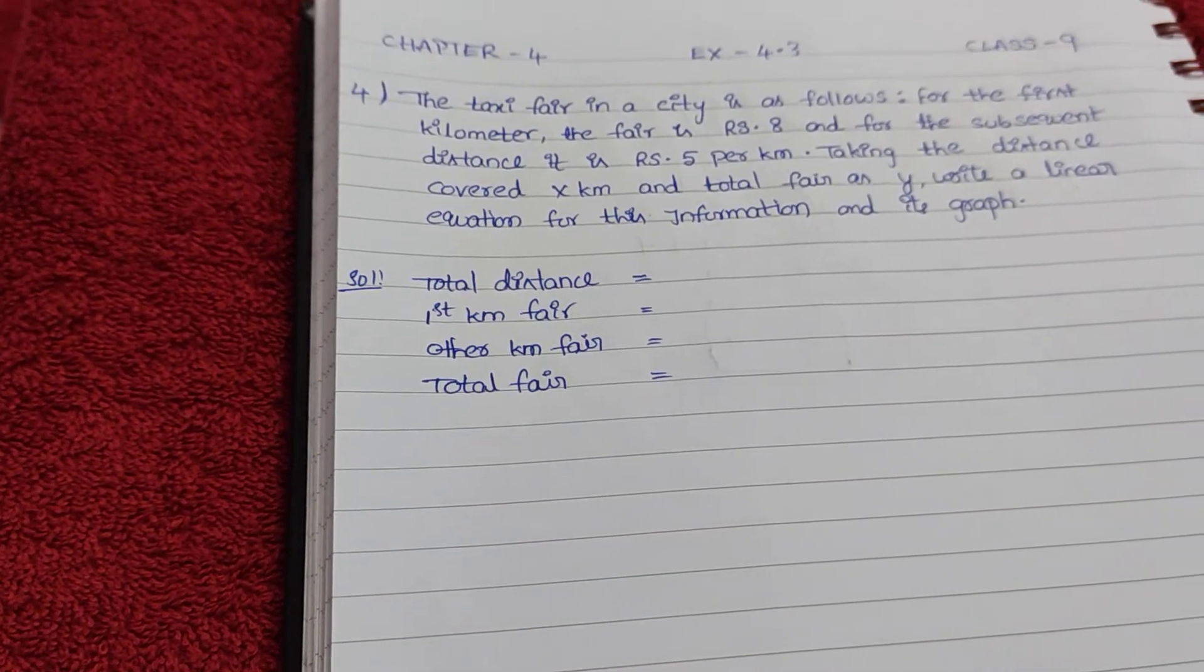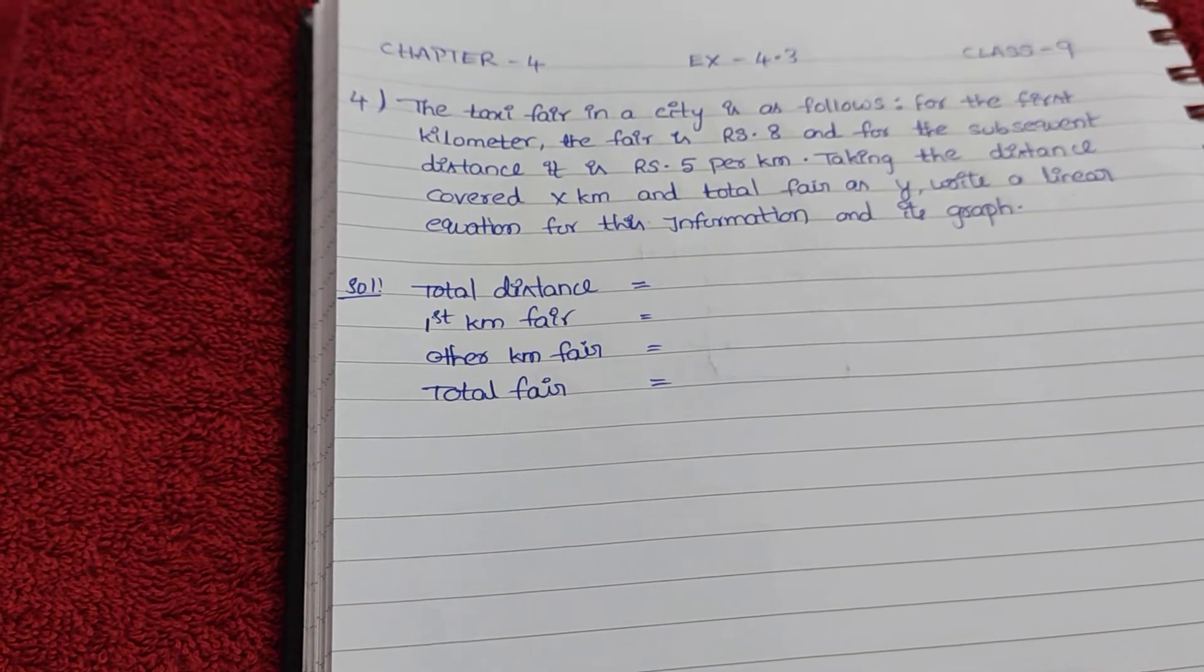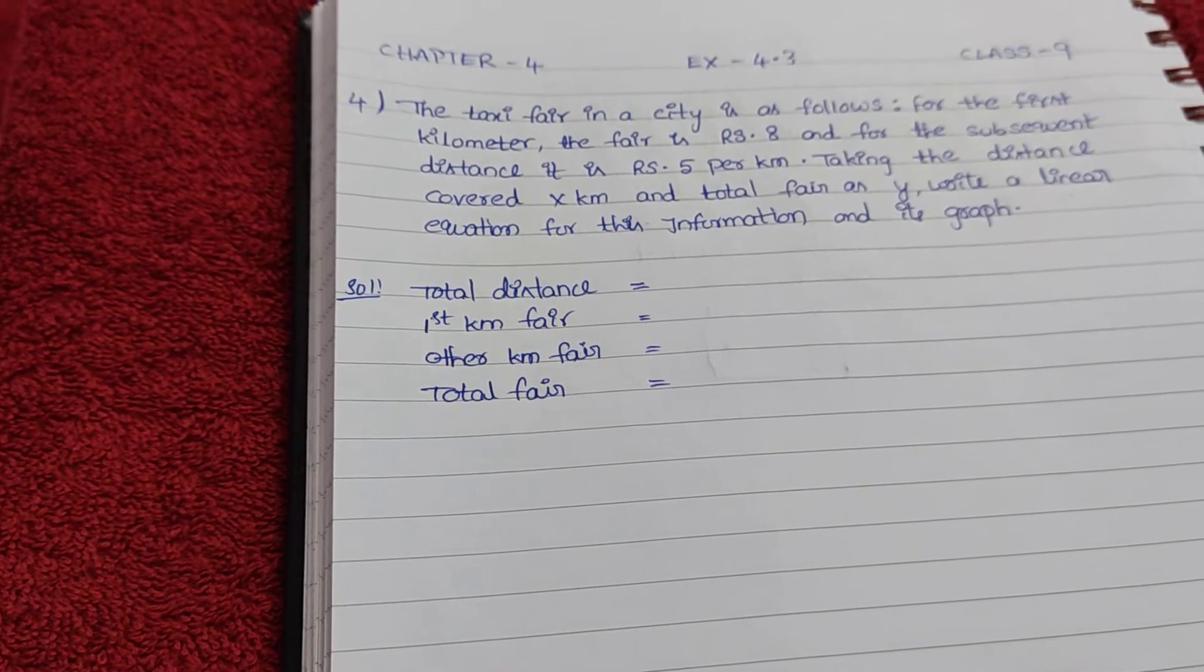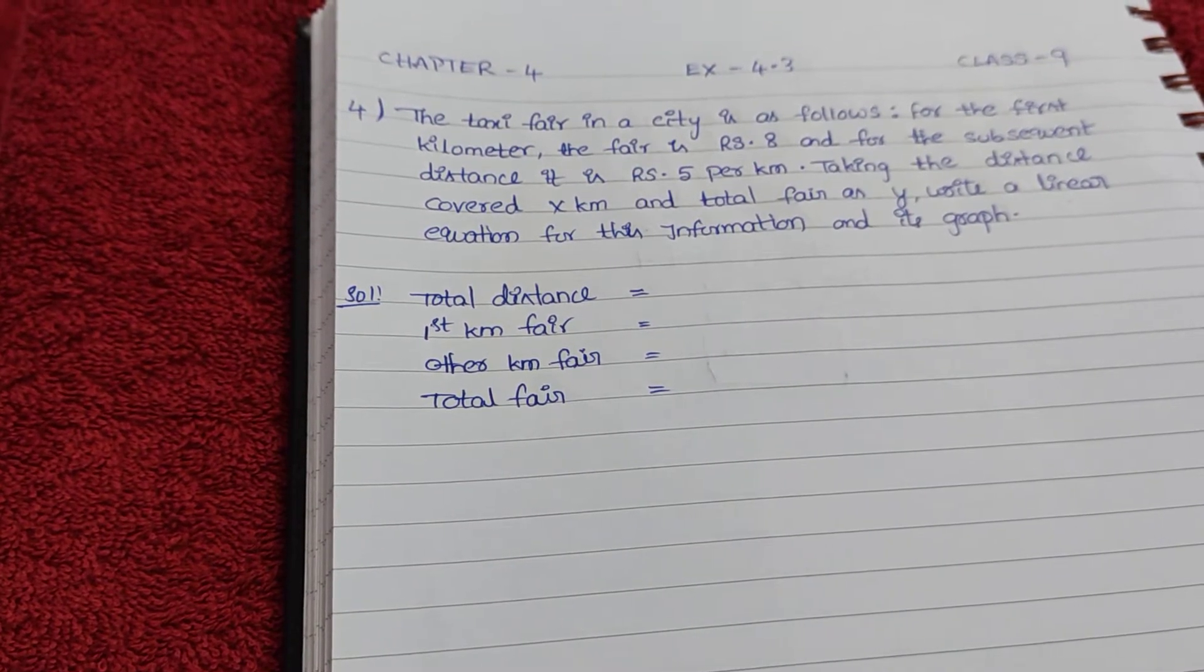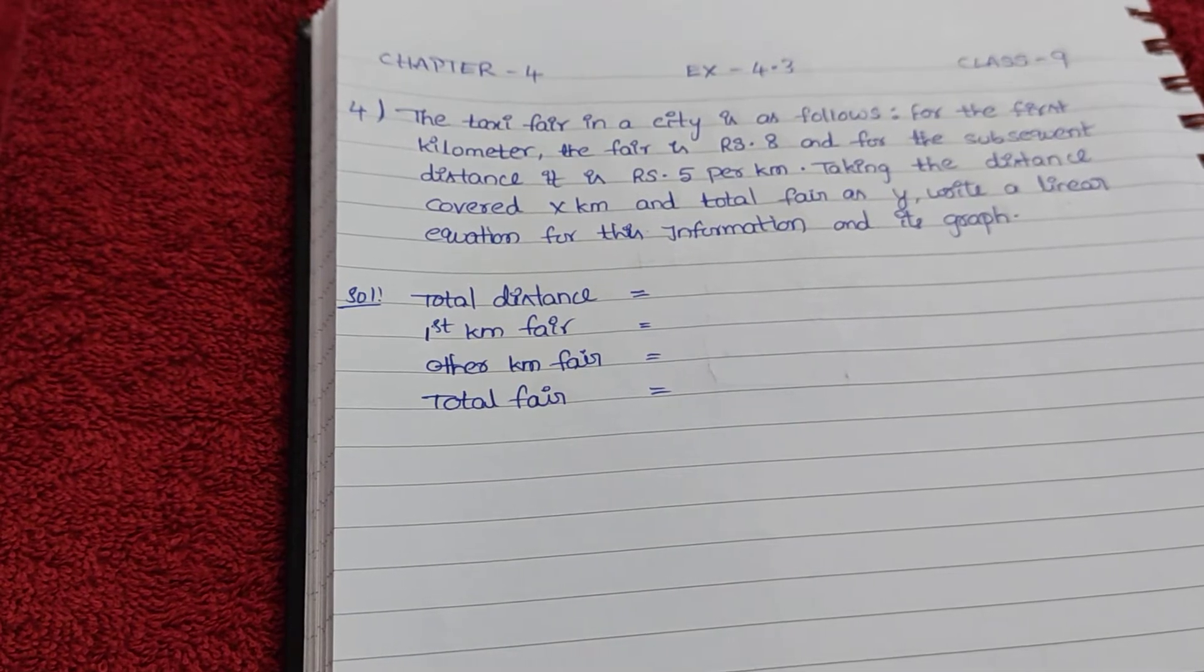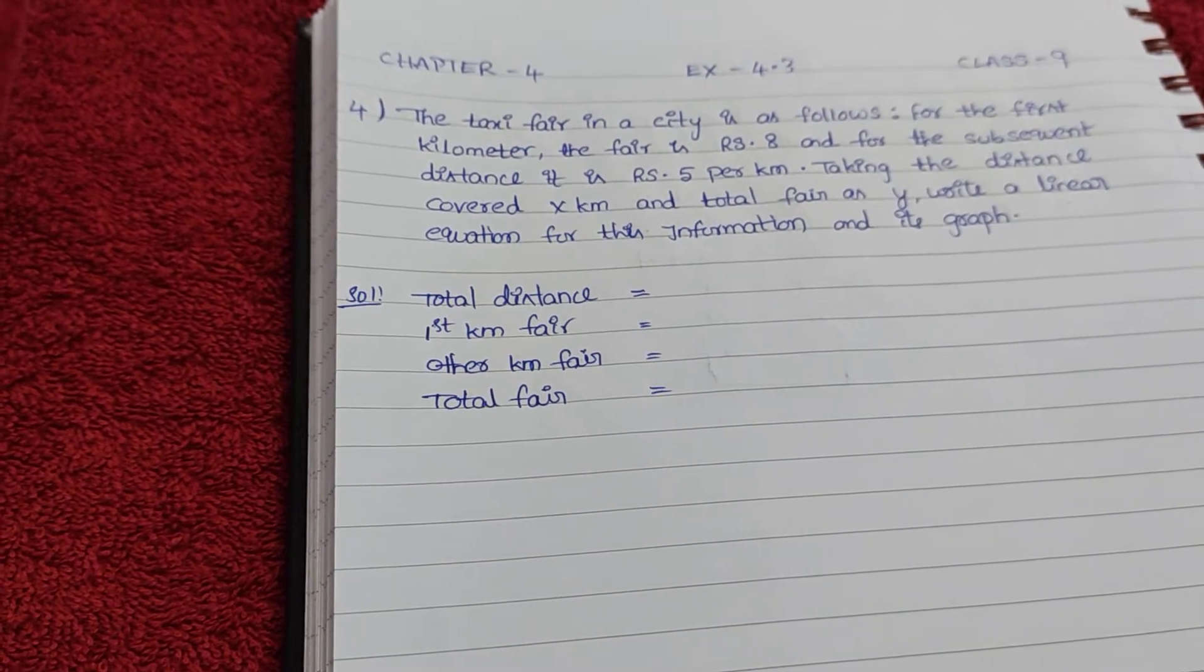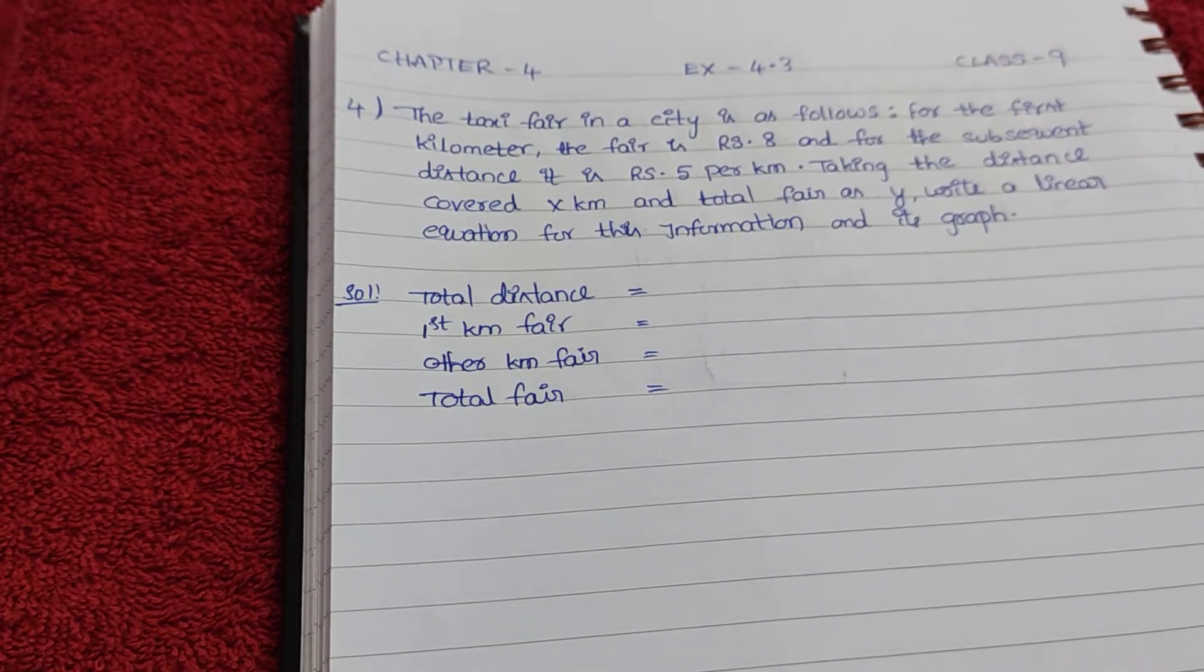4th question: The taxi fare in a city is as follows. For the first kilometer, the fare is Rs. 8 and for the subsequent distance it is Rs. 5 per kilometer. Taking the distance covered as x kilometer and total fare as y, write a linear equation for this information and its graph.